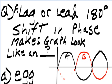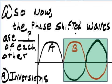A lag or lead 180 degree shift in phase makes the graph look like a what? Answer: egg. So now the phase shifted waves are blank of each other. Answer: inversions of each other.